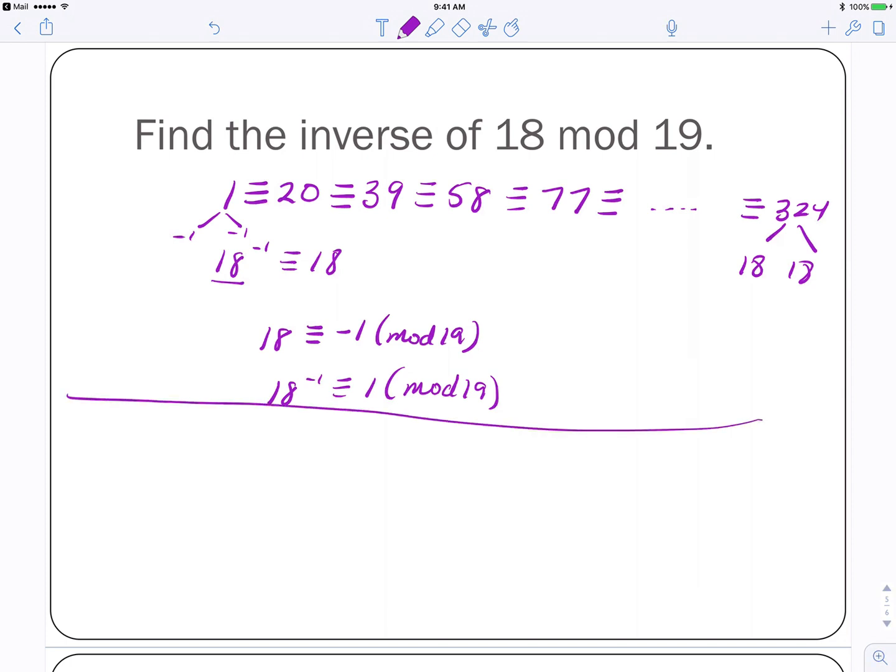It would work the same way. Let's suppose I asked you to find the inverse of 17 mod 19. 17 is the same thing as negative 2 mod 19. Alright? If I add 19 to negative 2, I get 17. Looking back up here, 20 is negative 2 times negative 10. So negative 2, the inverse of negative 2 is negative 10 mod 19.